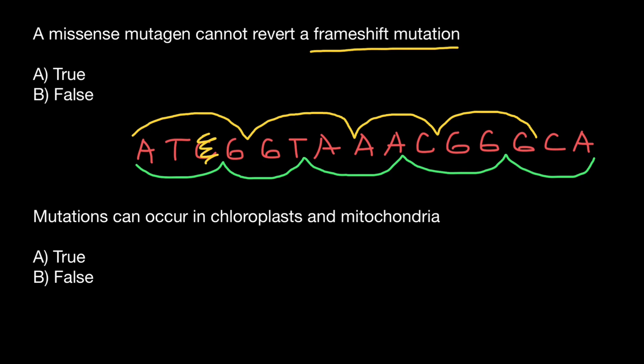We can also get a frameshift mutation if we delete two or more nucleotides or add an extra nucleotide. Now, what is a missense mutation and missense mutagen? Imagine that instead of deleting this nucleotide, we replace it with a different nucleotide — for example, cytosine with guanine.